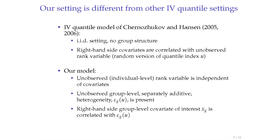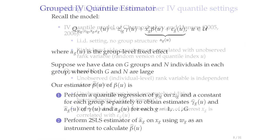Chernozhukov and Hansen is actually a set of papers, not just one or two. They consider the IID setting with no group structure, and the endogeneity comes from the correlation of an unobserved rank variable—a random version of the quantile index—with covariates. In our model, this rank variable is independent of covariates, but instead we have a group structure with group-level unobservables that are additively separable and correlated with covariates. These two models are simply different—not nested—and applicable in different settings.